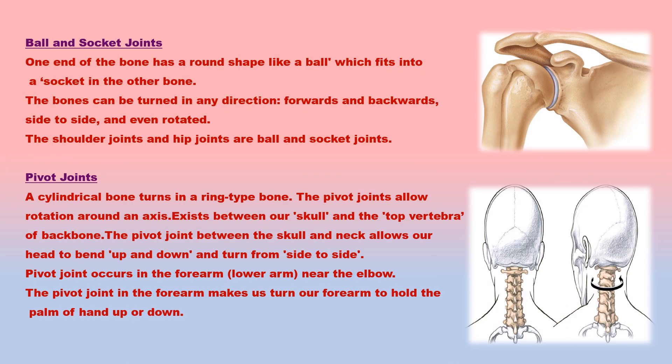In a ball and socket joint, one end of the bone has a round shape like a ball, which fits into a socket or hollow space in the other bone. The ball-type end can turn freely in the socket, so the bones can be moved in any direction — forwards and backwards, side to side, and even rotated. Ball and socket joints occur at the shoulder and hips, allowing much more movement than a hinge joint.